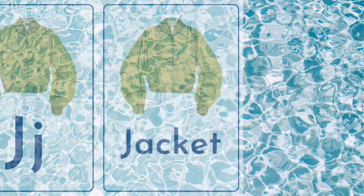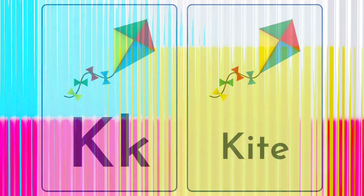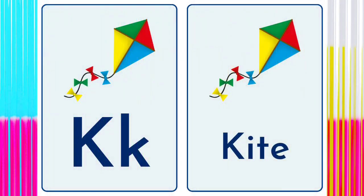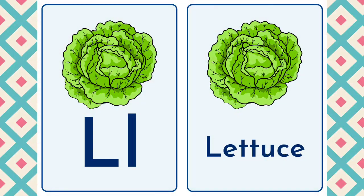J is for Jacket. J, J. Jacket. K is for Kite. K, K. Kite.